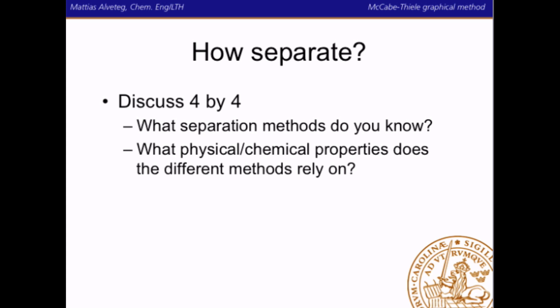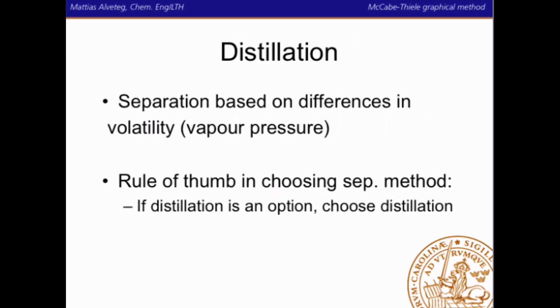So how do we separate? I suggest that you spend some minutes by yourself, or preferably discussing this with fellow students — what separation methods do you know and what physical chemical properties do these different methods rely on? We, however, will continue and talk about distillation. Distillation is a separation process based on differences in volatility or vapor pressure. A rule of thumb is that if distillation is an option, then choose distillation, because it is a very well-researched separation method with a lot of knowledge available.